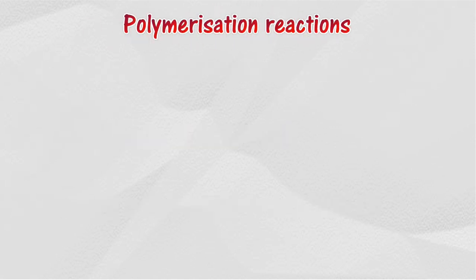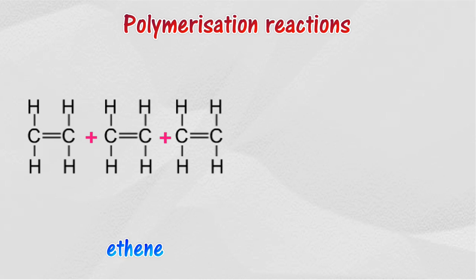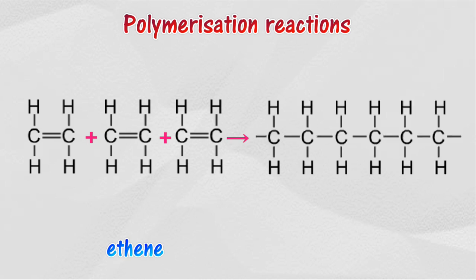Polymerization is a process of combining small molecule units to form a long chain molecule. For example, the polymerization of ethene can be carried out at a temperature of 200 degrees Celsius and under a pressure of 1500 atmospheres to form polythene.